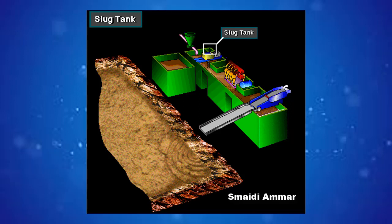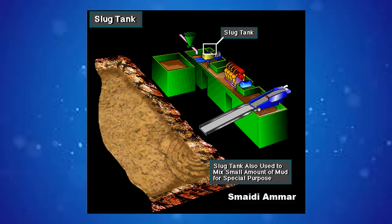A slug tank is a relatively small separate tank, or it may be a small separate part of a larger tank. The crew uses the slug tank to mix a slug — a small amount of heavy mud that is pumped down the string. Crew members may also use a slug tank to mix a small amount of mud for a special purpose, such as placing a small quantity of high viscosity mud, also called a pill, at some point downhole.